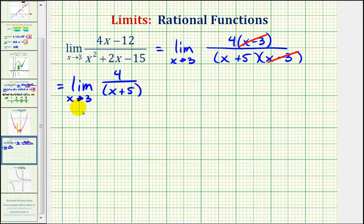Notice the simplified function is defined at x equals 3. So we can determine this limit by performing direct substitution. We would have 4 divided by 3 plus 5 which is 8. 4 eighths simplifies to 1 half. So this would be our limit.